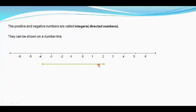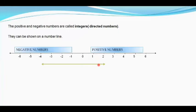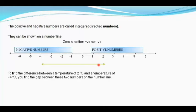All the numbers on the right-hand side of zero are called positive numbers. The numbers on the left-hand side of zero are called negative numbers, and zero is neither positive nor negative. To find the difference between a temperature of two degrees Celsius and a temperature of minus four degrees Celsius, we have to find the gap between these two numbers on the number line.